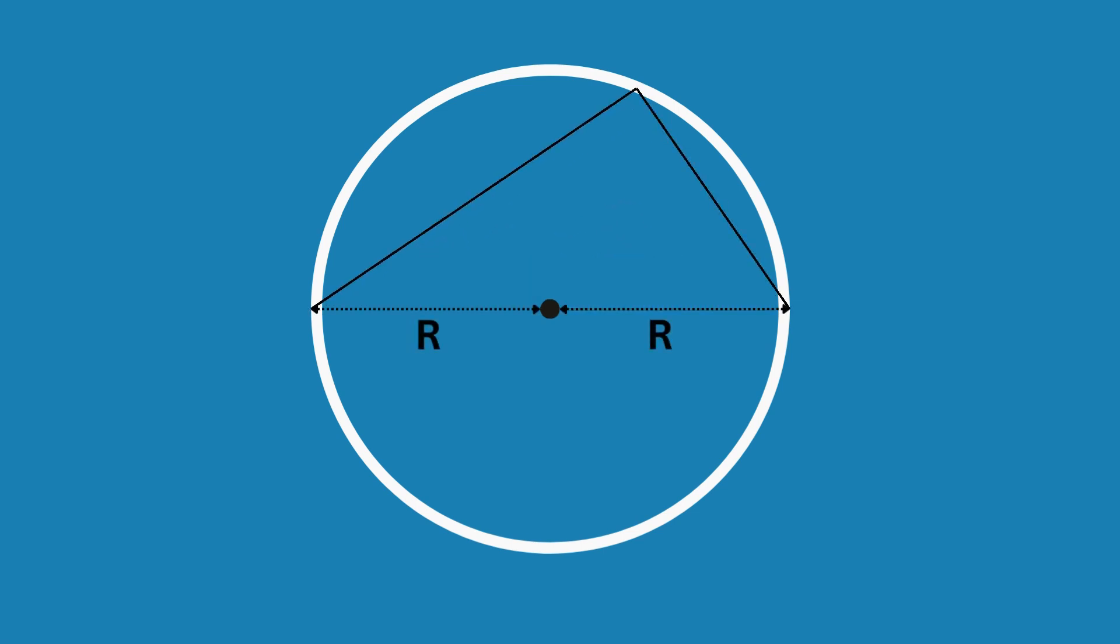Now we can split this line into two radii. These are lines from the centre of the circle to the circumference of equal length.